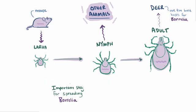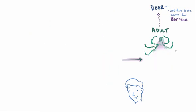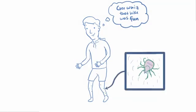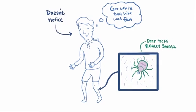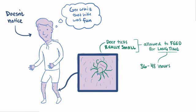Both nymphal and adult stage deer ticks, although humans are not their preferred meal, occasionally feed on unknowing humans. Nymphal stage deer ticks in particular are really small and therefore sometimes hard to notice, meaning they can be allowed to feed for long periods of time, allowing the tick to transmit the disease. The Borrelia bacteria are transmitted within the saliva of the tick as it's feeding, and it typically takes about 36 to 48 hours of attachment time for the bacterium to move from the tick's gut into the saliva and into the human.